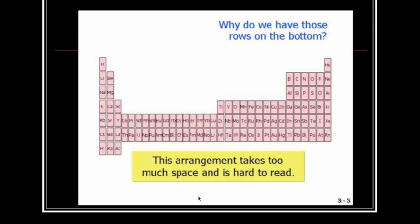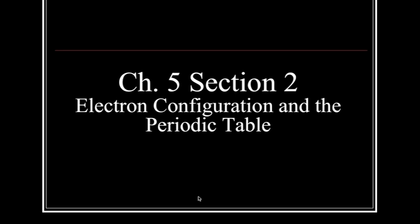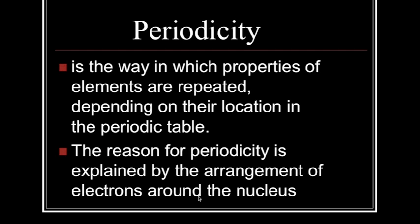If we put those series in their original place, the Periodic Table would be a lot more wide. The electron configurations in the Periodic Table show periodicity, which is the way in which properties of elements are repeated depending on their location in the Periodic Table. The reason for periodicity is explained by the arrangement of electrons around the nucleus. So, depending on the electron configuration will depend on the properties of the element. Periodicity tells us that elements are going to react a certain way because of their location and their electron configuration.